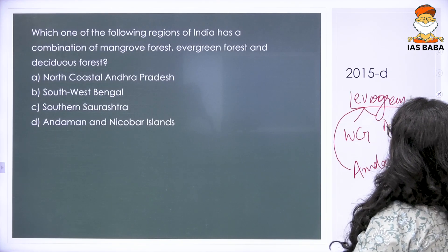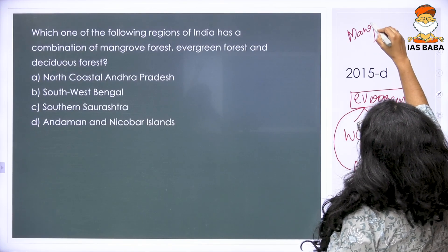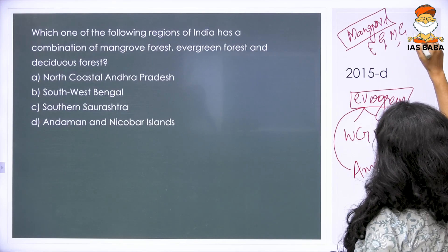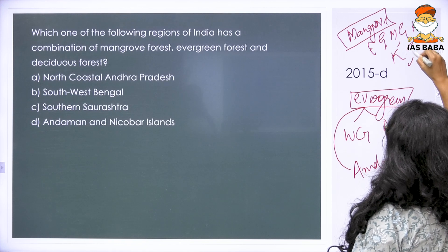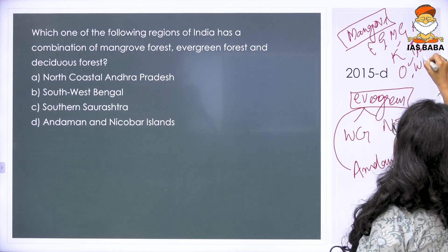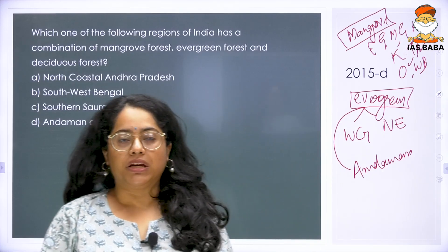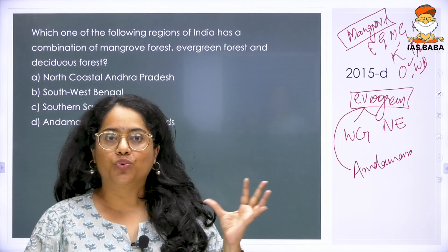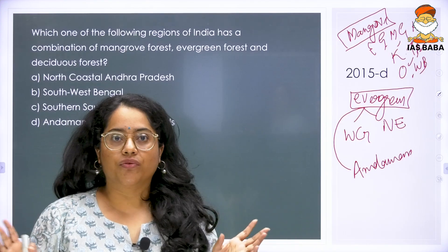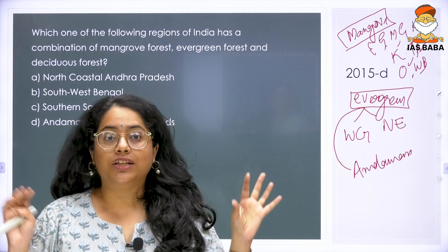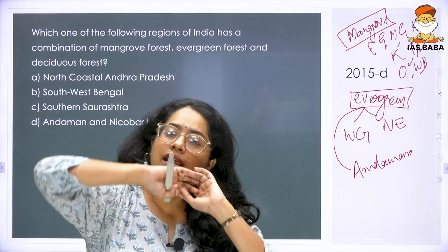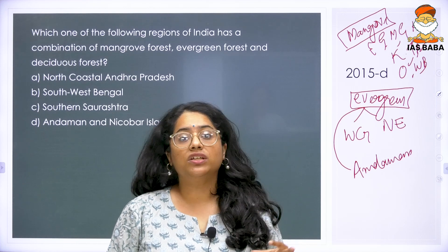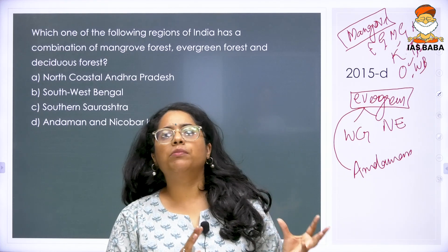When you look at mangroves of India, they occur on the entire coastline — from Gujarat, Maharashtra, Goa, Karnataka, Kerala, Tamil Nadu, Andhra, Odisha, and West Bengal. All of these places do have mangrove populations. The islands — Lakshadweep and Andaman — also have mangrove populations. As for deciduous forest, it is present in a large number of areas in India. There are only very few states which do not have deciduous forest, because deciduous trees can grow in moderate to slightly hotter climates.